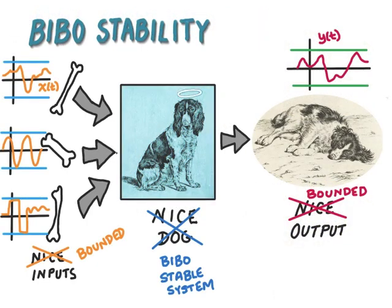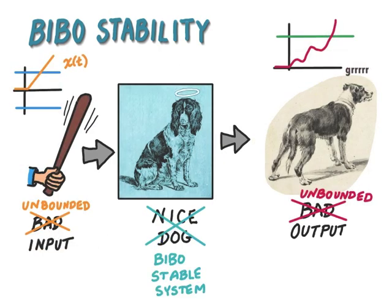So you see, nice inputs allow us to discriminate between the nice dog and the bad dog. This is the idea behind BIBO stability. We put in nice inputs — that is, bounded inputs — into our nice system, that is, the BIBO stable system, and whenever we put in a bounded input to our nice system, we are going to get a nice bounded output. We don't want to use unbounded inputs for a test of stability, because an unbounded input, even to a nice system, can produce an unbounded output. So it's not a very good test of stability to use an unbounded input.